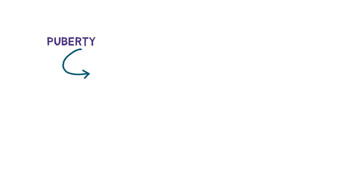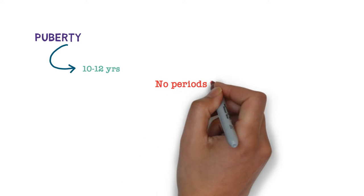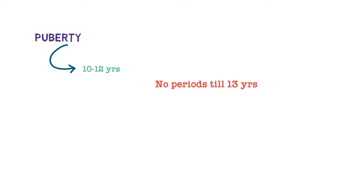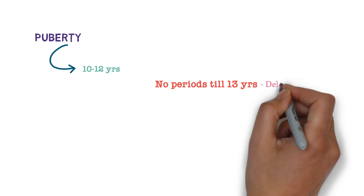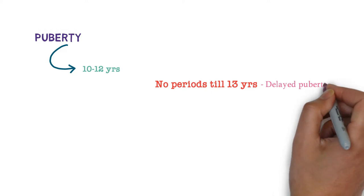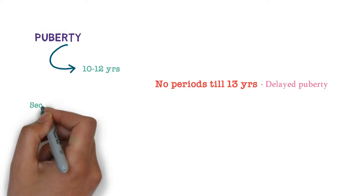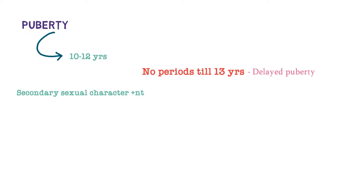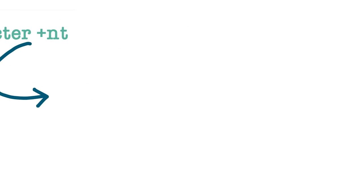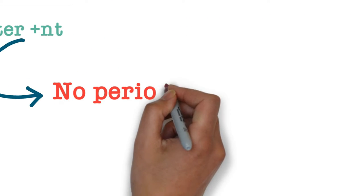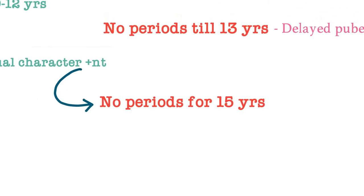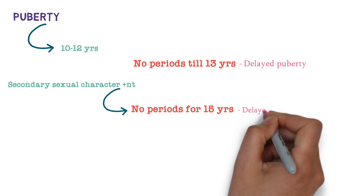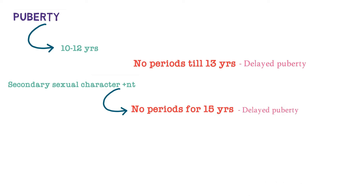Puberty occurs around 10 to 12 years. So if there are no periods by 13 years, we say it is Delayed Puberty. And if secondary sexual characters are present but there are still no periods by 15 years, that is also Delayed Puberty.